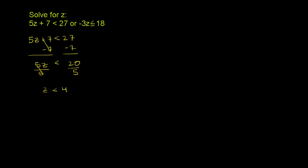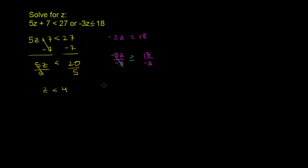Now let's look at the other condition: negative 3z is less than or equal to 18. To isolate z, we divide both sides by negative 3. But remember — when you divide or multiply both sides of an inequality by a negative number, you have to swap the inequality. So dividing both sides by negative 3 and swapping the sign: the less than or equal to becomes greater than or equal to. Negative 3 divided by negative 3 is 1, so we get z is greater than or equal to 18 over negative 3, which is negative 6.